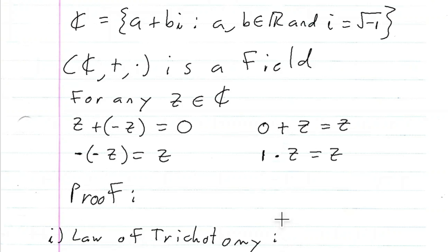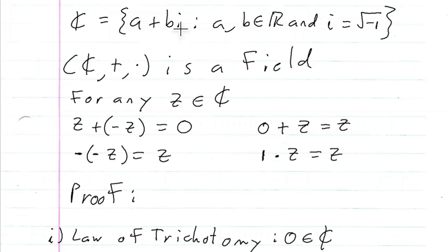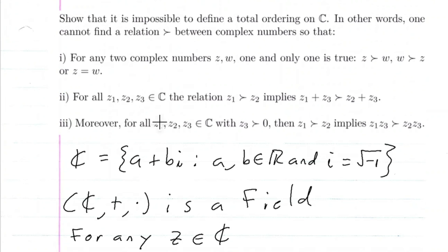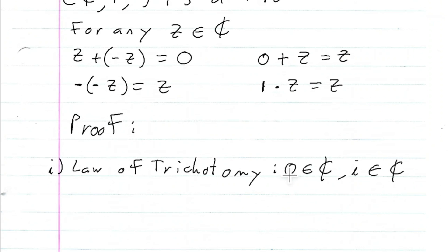Zero is an element of the complex numbers: if I let a equal zero and b equal zero, then zero plus zero times i is just zero, and since zero is a real number, it fits the definition. Similarly, i is a complex number: letting a equal zero and b equal one gives zero plus one times i equals i. Since these three conditions must hold for all complex numbers, I'll look at zero and i specifically.